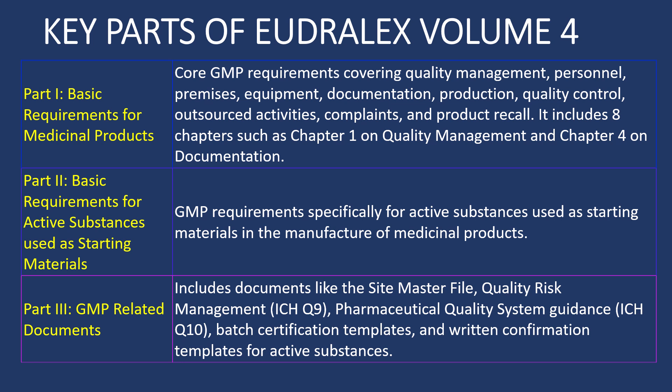Broadly, we can divide the information in EudraLex Volume 4 into three parts. Part 1 is for basic requirements for medicinal products, which covers quality management, personnel, premises, equipment, documentation, production, quality control, etc.